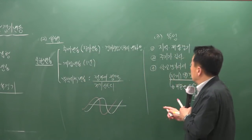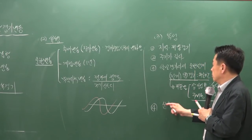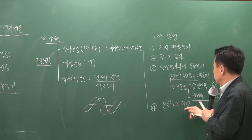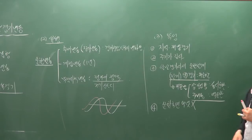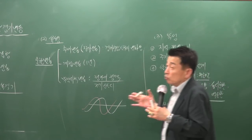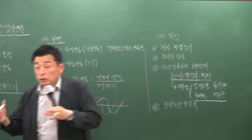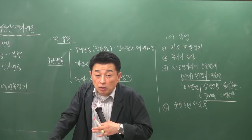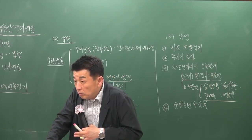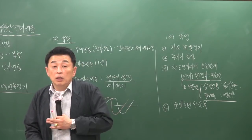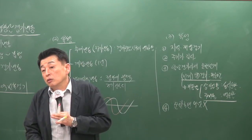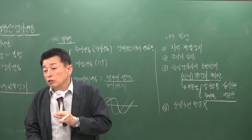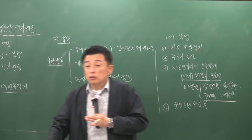부동산 경기는 순환 국면이 뚜렷하거나 명백하지 않아요. 일반 경기도 마찬가지로 순환 국면이 뚜렷하게 나타나지 않아요. 부동산 경기는 뚜렷하지 않으나 일반 경기는 뚜렷하게 나타난다고 하면 틀려요. 이런 내용은 상식으로 접근하면 틀릴 수 있는 지문이라 출제자들이 유인 지문으로 자주 써요.